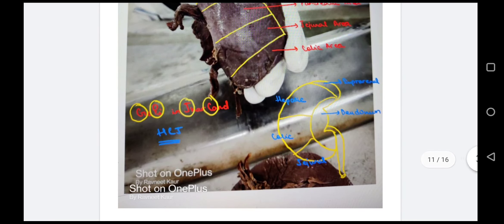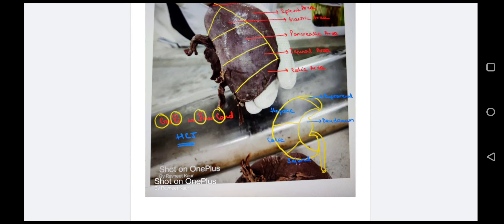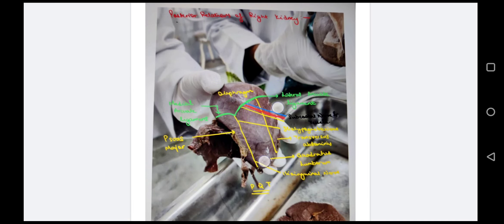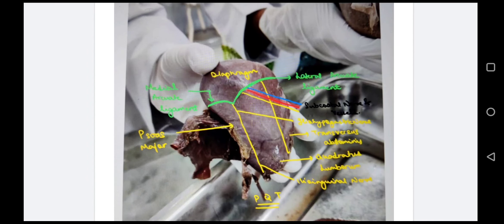For the right kidney, medially there is a line for the duodenum, then superiorly the suprarenal gland, and we remember the rest by HC-J: hepatic area, colic area, and jejunal area. For the posterior surface of the right kidney, there is the medial arcuate ligament and lateral arcuate ligament, both related to the diaphragm. Three muscles from medial to lateral are remembered by PQT: psoas major, quadratus lumborum, and transverse abdominus. Below the lateral arcuate ligament are subcostal nerves and vessels. At the junction of psoas major and quadratus lumborum: superiorly the iliohypogastric nerve and inferiorly the ilioinguinal nerve.